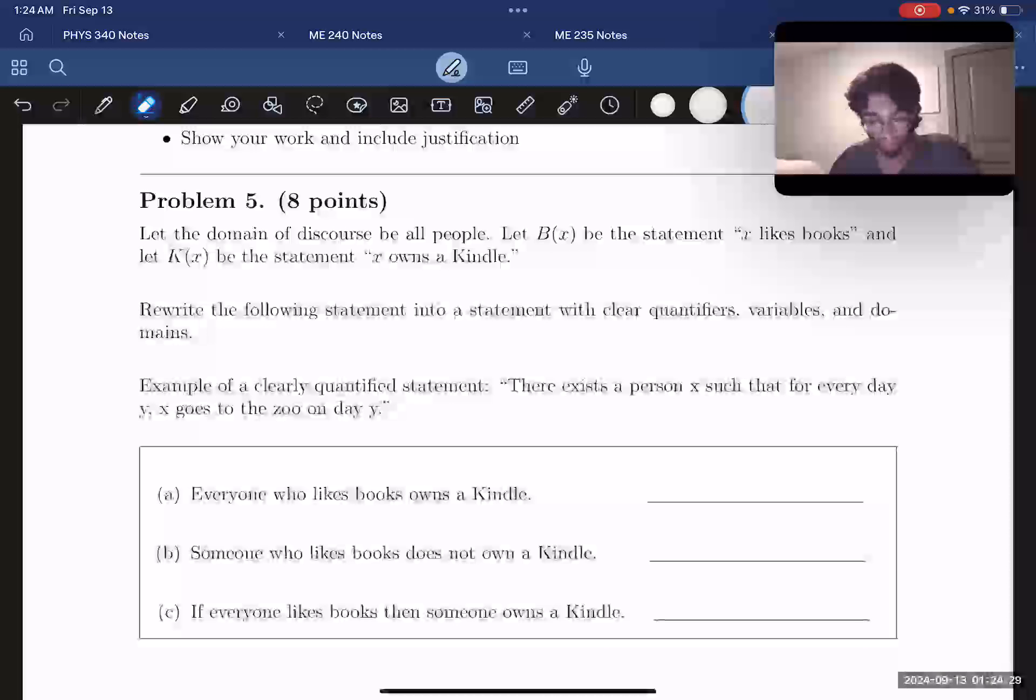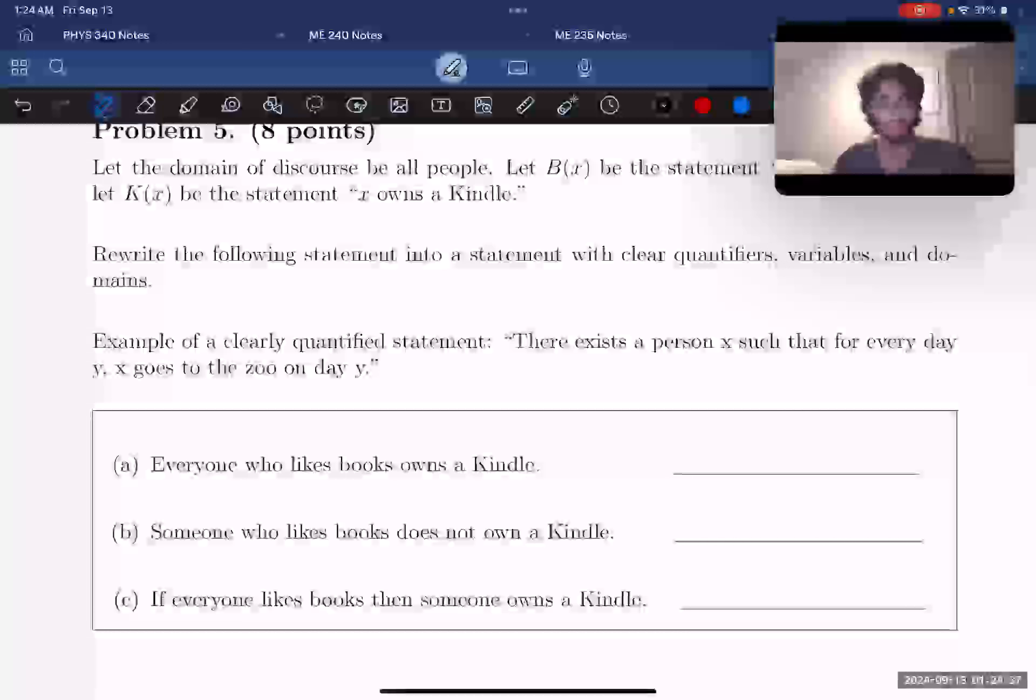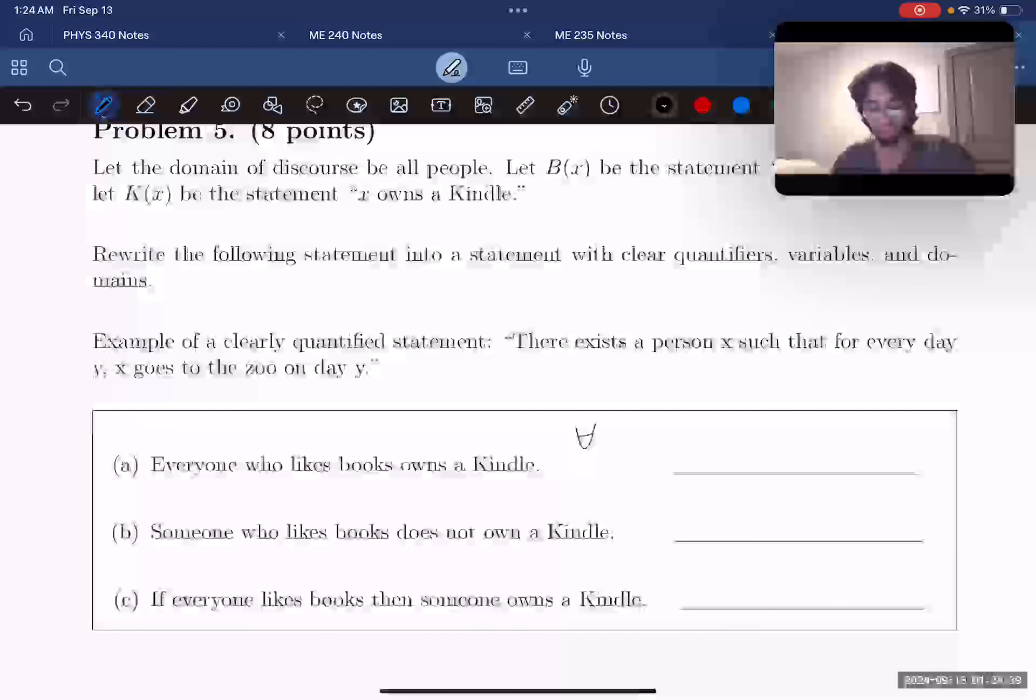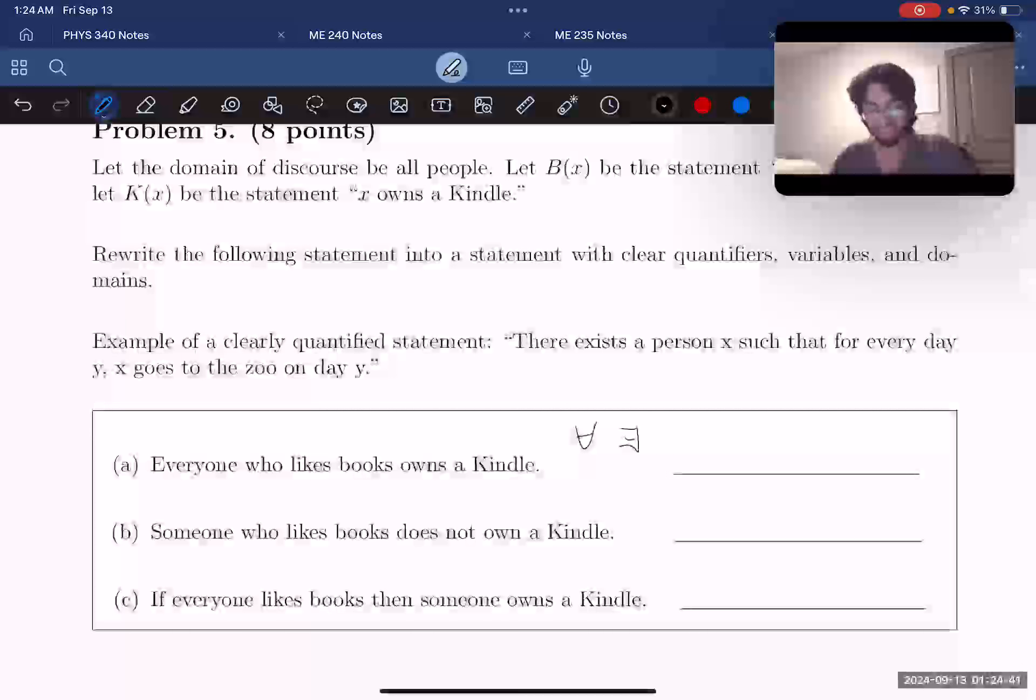And we're given an example of what a clearly quantified statement is that isn't relevant to the question. It says there exists a person X such that for every day Y, X goes to the zoo on day Y. This is kind of just telling us that we can't use math notation, like the for all symbol, the there exists symbol, the implies symbol, and all that stuff. That's to be written in English.